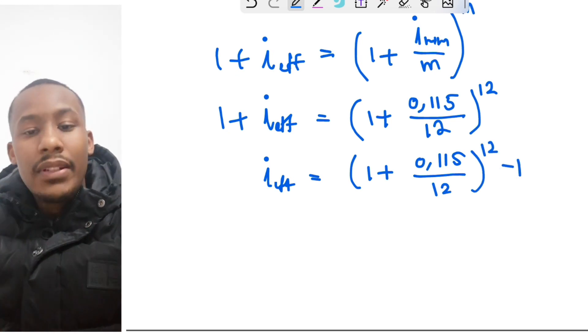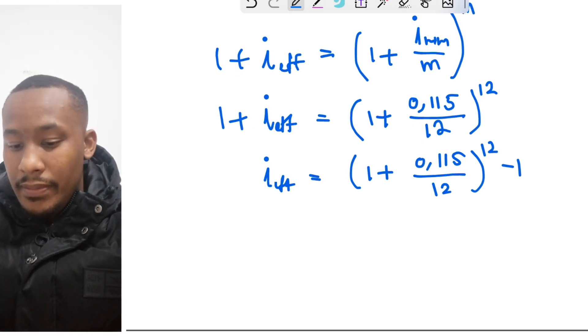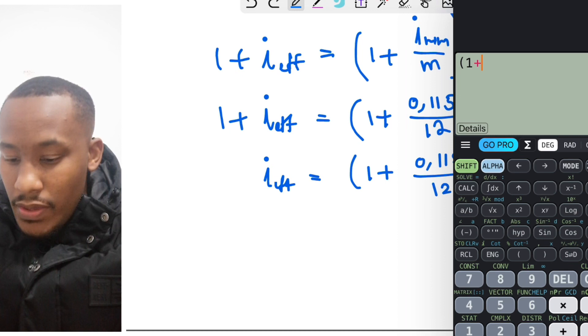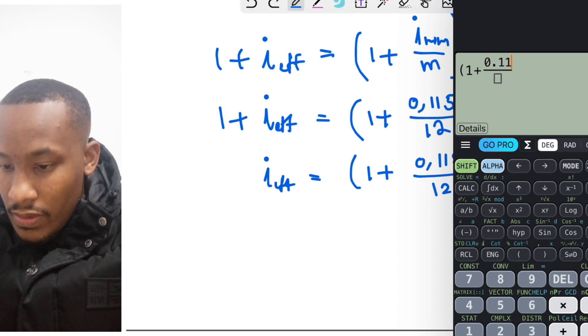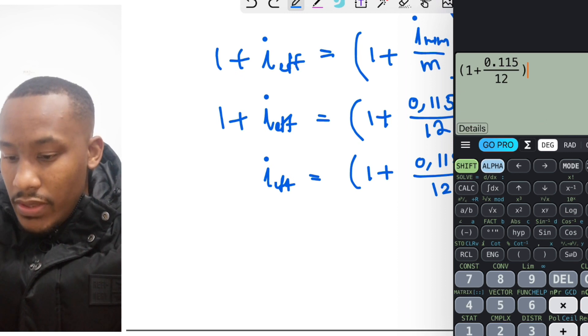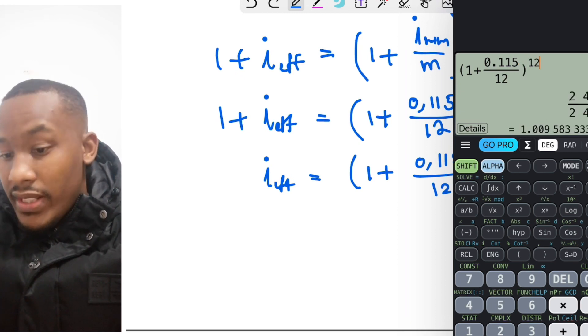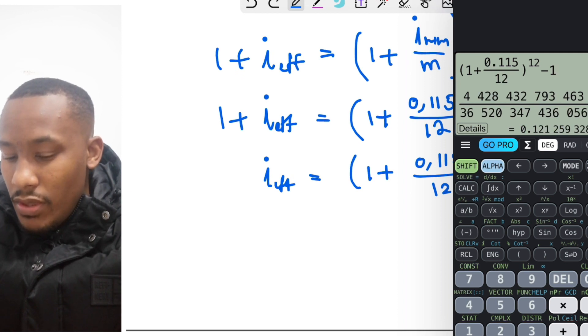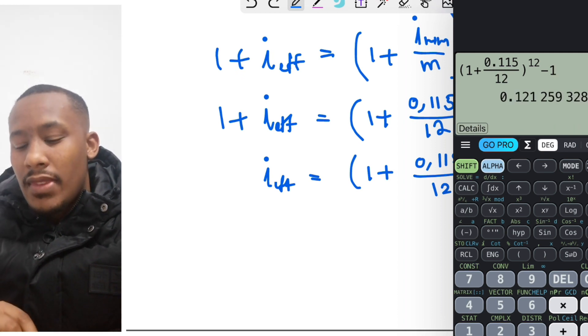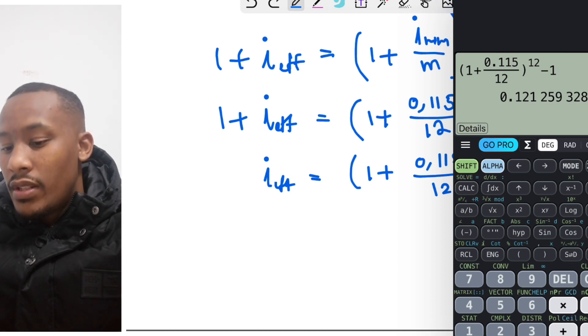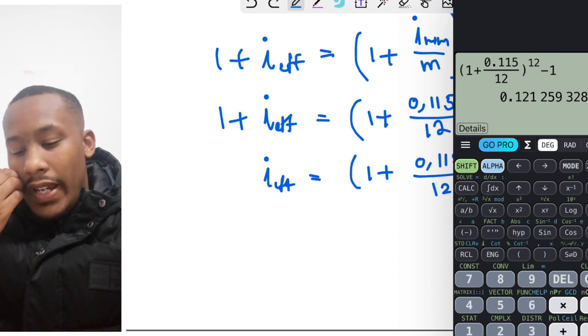Now before you go ahead and punch this in on your calculator, let's first subtract 1 from both sides to get rid of the plus 1 on the left-hand side. Now let's bring out our calculator here and we can simply punch in our numbers.